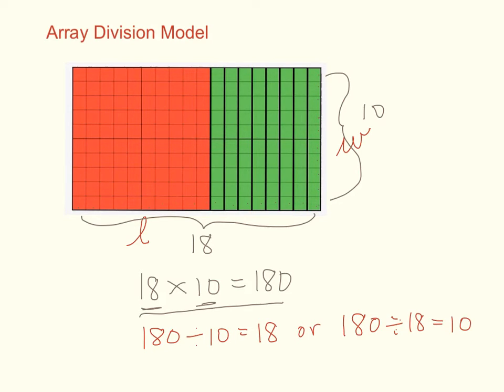Alright, so basically the array model is making a perfect rectangle, finding the sides, those are going to be your divisor and answer actually, and then the number of boxes inside this whole thing right here is your dividend.